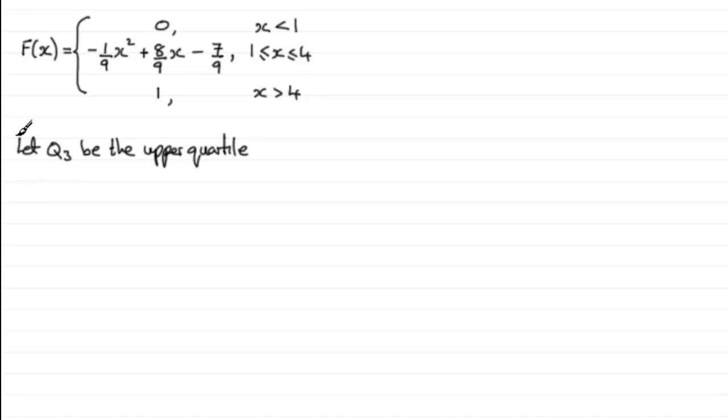Now what I've done here is I've said let Q3 be the upper quartile, and what we should know is that the probability of the random variable X being less than or equal to that upper quartile Q3 should be three quarters or 75% or 0.75.